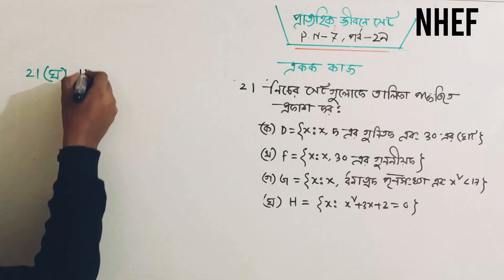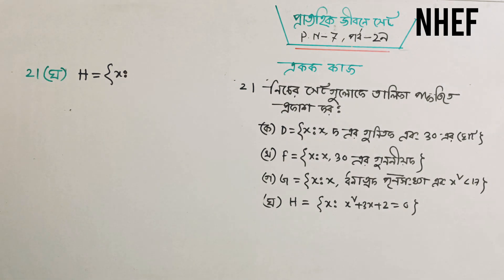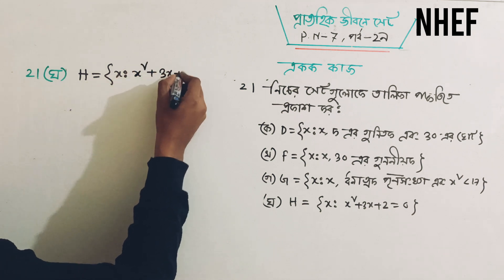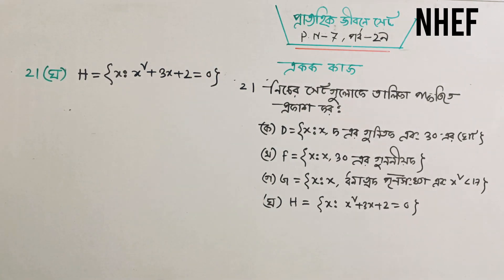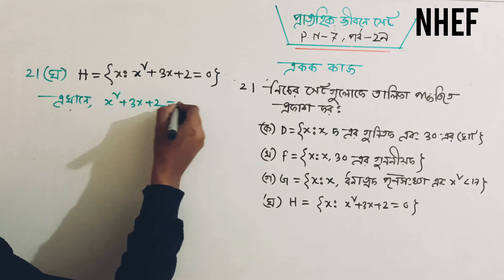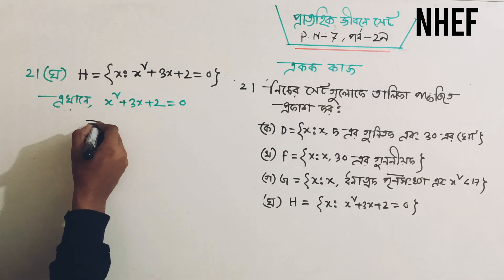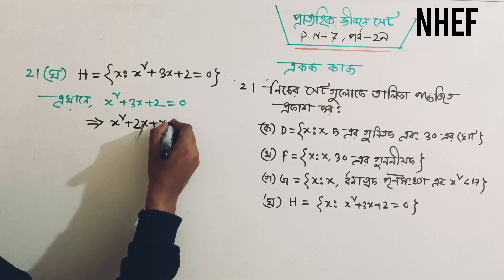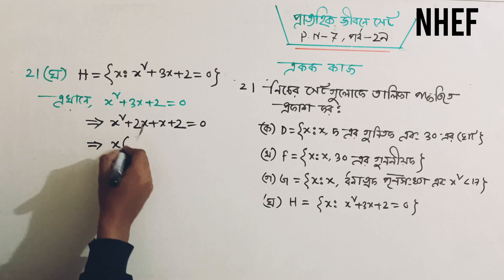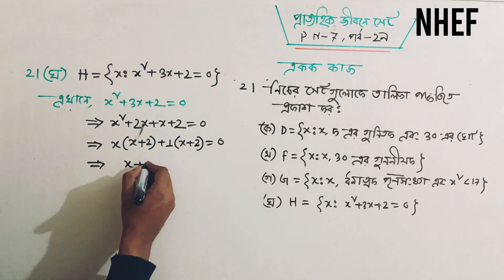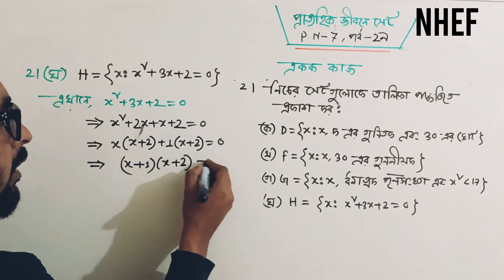So let's take a look at x² + 3x + 2 = 0. x is equal to x, and x square plus 3x plus 2 is equal to 0. So x plus 2 plus 1 is equal to 0, so x plus 1 into x plus 2 is equal to 0.